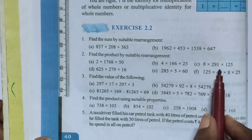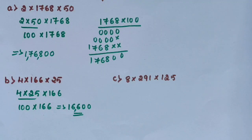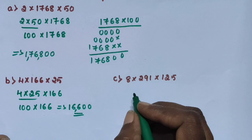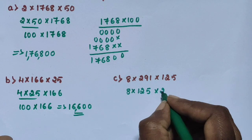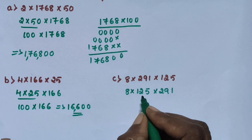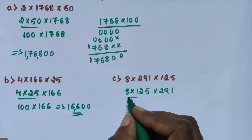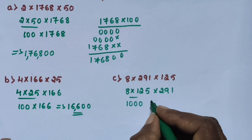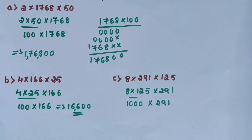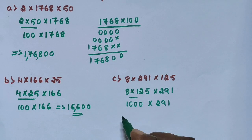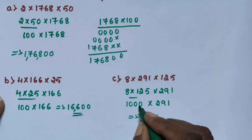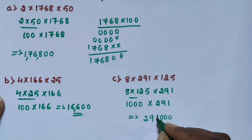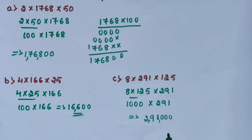Next, sub-question C: 8 into 291 into 125. Using the same process, rearrange the numbers and multiply these three numbers: 8 into 125 into 291. First, multiply 8 into 125, which is 1000, then 1000 into 291. Multiply 1000 into 291: units, tens, hundreds, thousands — the answer is 291,000.